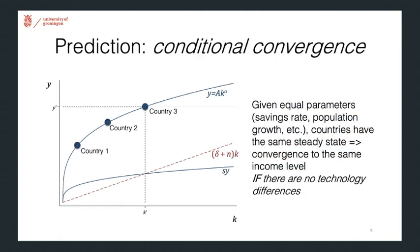Now, very much related to this conclusion is that if you have countries with the same parameters or the same savings rate, the same population growth rate, et cetera, countries will have the same steady state income level. So countries that are initially poor will converge to the same income level. Now, this is under the assumption that there are no technology differences. So the parameter A, if that is the same across countries, then we would see income levels converge to the same levels.